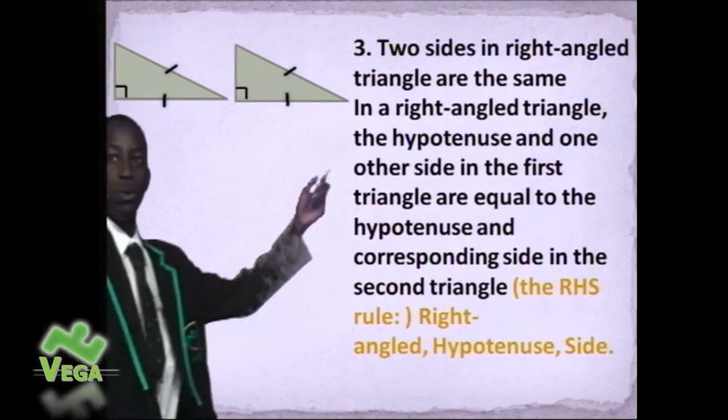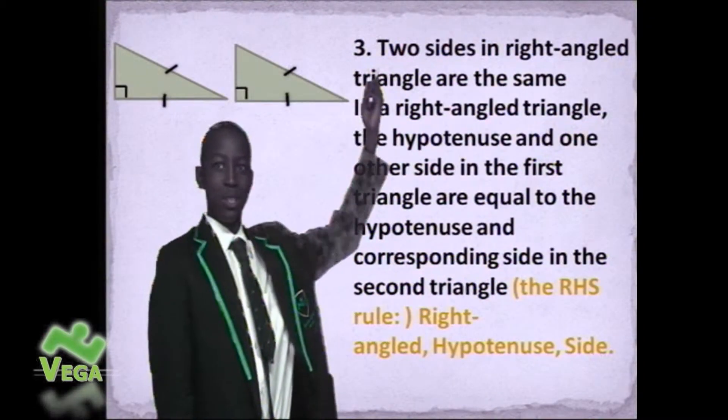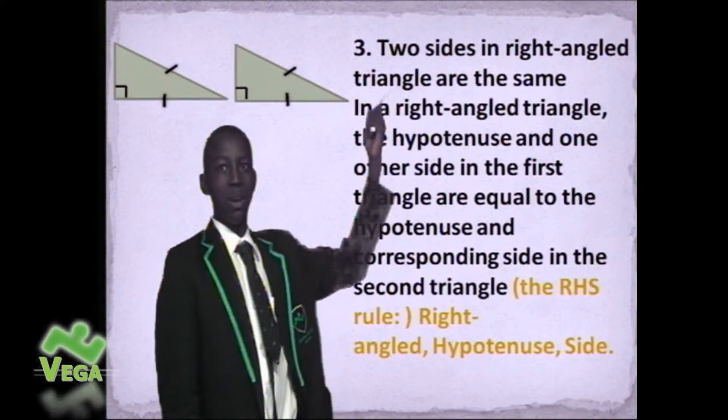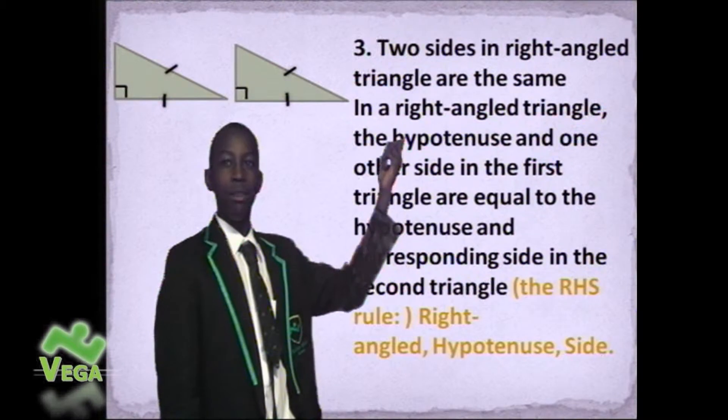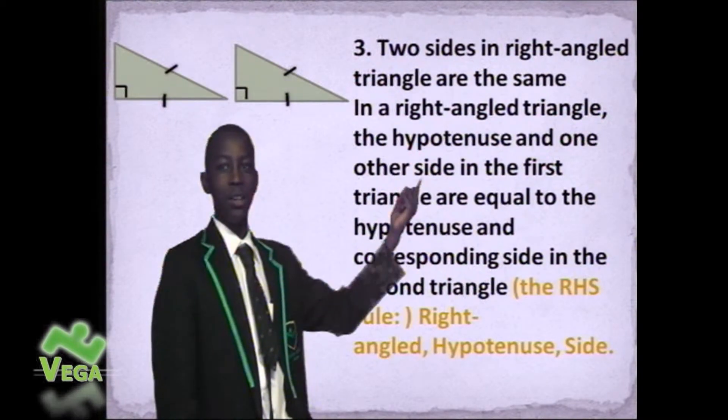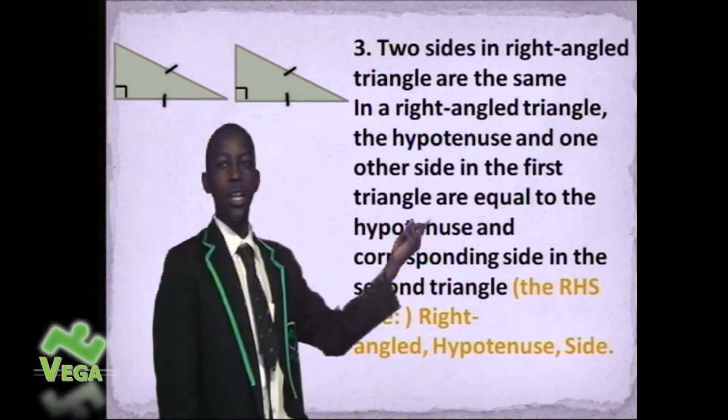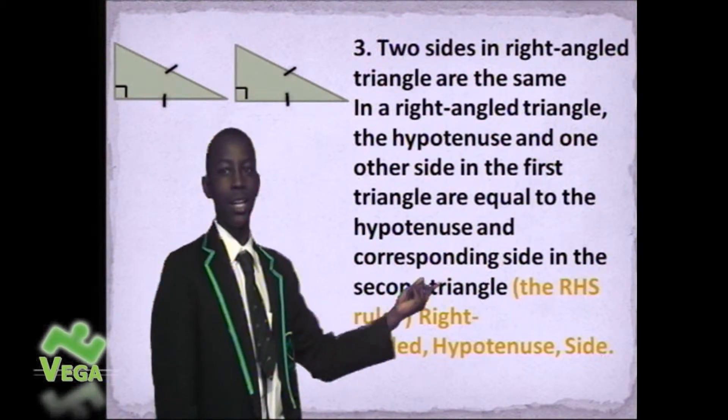The third rule of congruent shapes is two sides in the right angle triangle are the same. In a right angle triangle, the hypotenuse and one other side in the first triangle are equal to the hypotenuse and corresponding side in the second triangle.